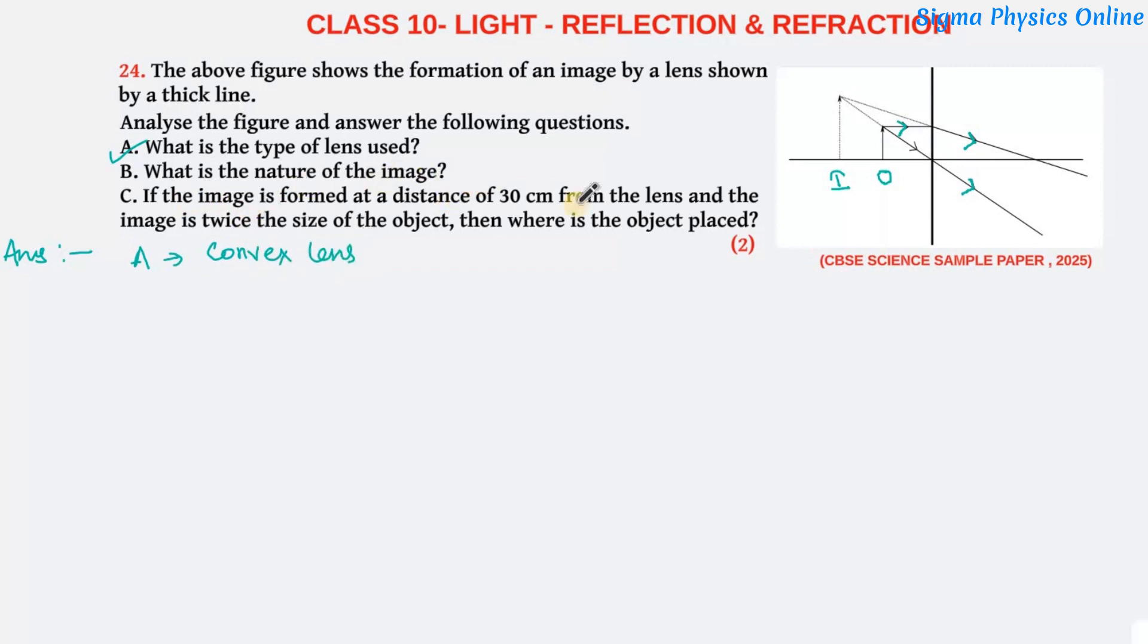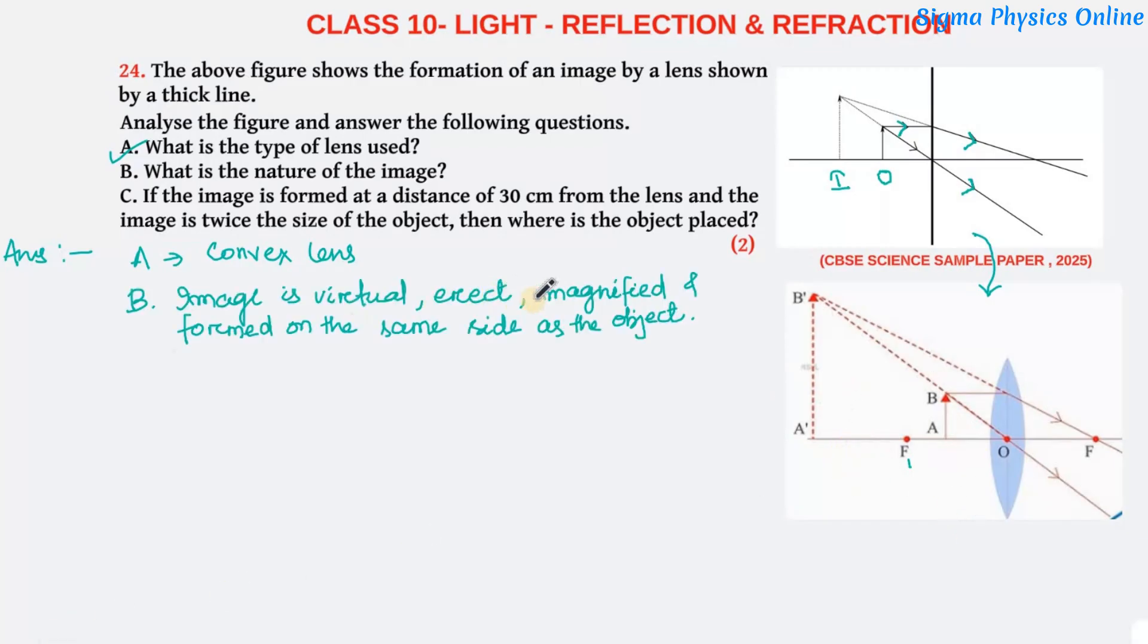Now what's the nature of the image? This is the ray diagram corresponding to this image with the convex lens when the object is placed in between F1 and O. As we can see, the image formed is magnified, virtual, erect, and is formed in front of the lens on the same side as the object. So the image is virtual, erect, magnified, and formed on the same side as the object.